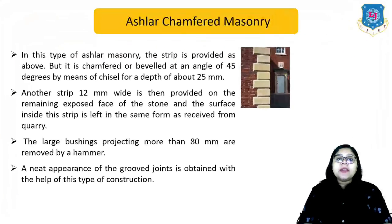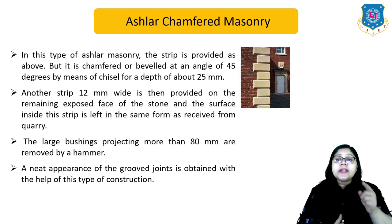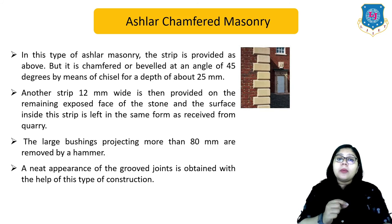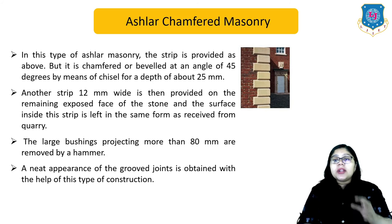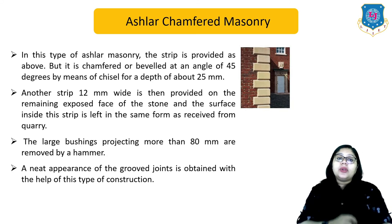In ashlar chamfered masonry, the strip is provided as before but it is chamfered or beveled at an angle of 45 degrees by means of a chisel for a depth of about 25 mm. Another strip 12 mm wide is then provided on the remaining exposed face of the stone, and the surface inside the strip is left in the same form as received from the quarry. Large bushings projecting more than 80 mm are removed by a hammer, giving a neat appearance of grooved joints.